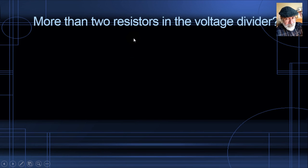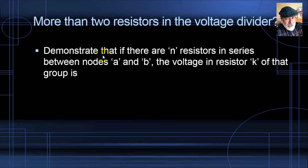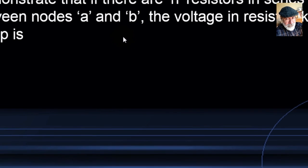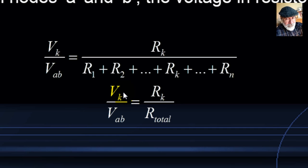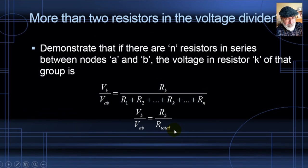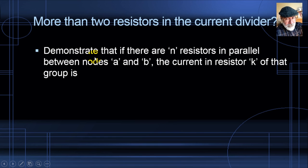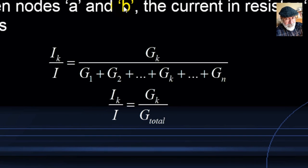As an exercise, demonstrate that with N resistors in series in a voltage divider between nodes A and B, the voltage across resistor K is the same percent of the total voltage that RK is of the total resistance. Similarly, with N resistors in parallel in a current divider, the current in resistor K is the same percent of the total current that its conductance GK is of the total conductance.